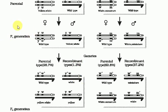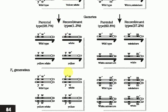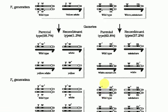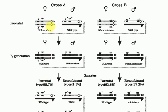When we inter-cross the F1 progeny, we get an F2 generation that does not resemble the data from Mendel's dihybrid cross. Mendel's dihybrid cross gives a phenotypic ratio of 9:3:3:1, but Morgan's data was very different from that. This is because of linkage — more linkage means less recombination, and in Cross B, less linkage resulted in 37.2% recombinant type individuals.